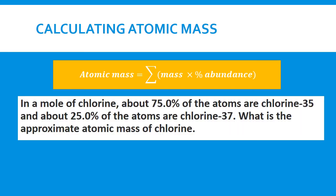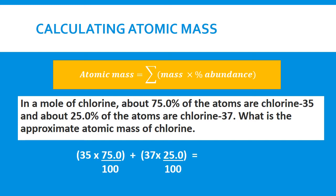For example: in a mole of chlorine, approximately 75% of atoms are chlorine-35 and 25% are chlorine-37. To find the approximate atomic mass of chlorine, remember the number at the end of the isotope name is the mass number. We simply do mass times percent for each isotope and find the sum, which gives us 35.5 atomic mass units.